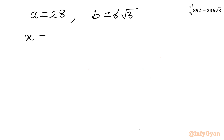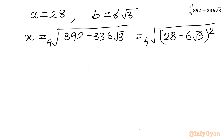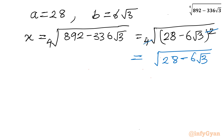Now let me write our expression. x equals 4th root of 892 minus 336 root 3, which equals 4th root of a minus b whole square, so 4th root of 28 minus 6 root 3 whole square. The 4th root means power 1 by 4, and the square term cancels, leaving only 1 square root — so it equals square root of 28 minus 6 root 3.